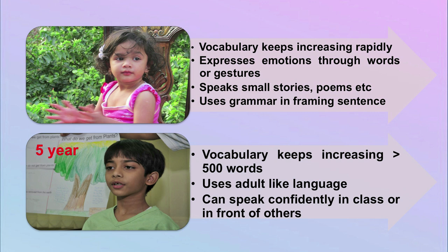By five years of age, vocabulary keeps increasing — a child may know more than 500 words — and the child uses adult-like language. The child can speak confidently in class or in front of others, showing independence in expressing emotions and forming the kinds of sentences they want to use.